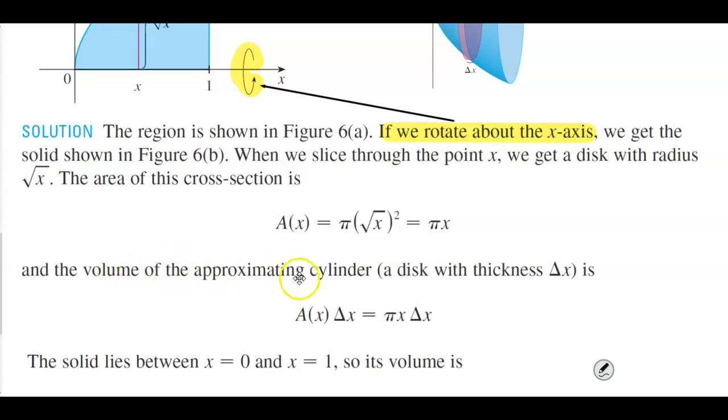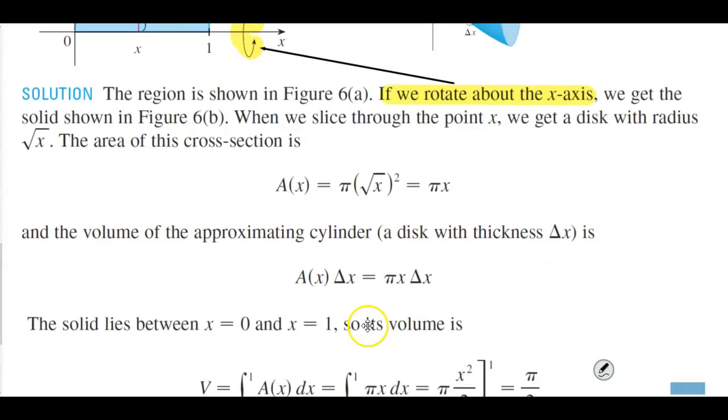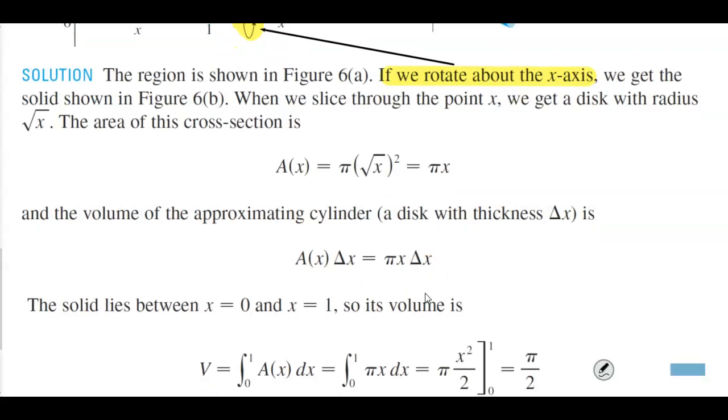The volume of the approximating cylinder, a disk with thickness Δx, is the following: you're taking the area times Δx, which equals πx Δx.